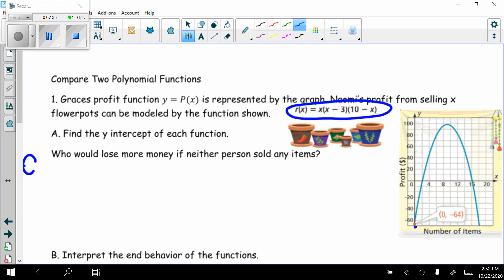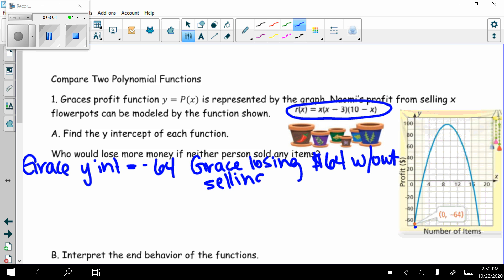So Grace, y-intercept. It's easy because they have it on the graph. It's negative 64. Let's think about what that means in context. Grace hasn't sold anything. x is 0. She hasn't sold anything. But her profit is negative 64. So Grace is losing $64 without selling anything. Her startup costs were like $64.